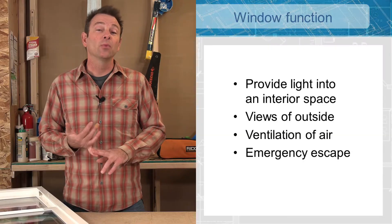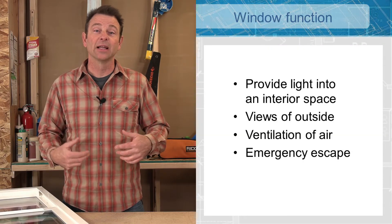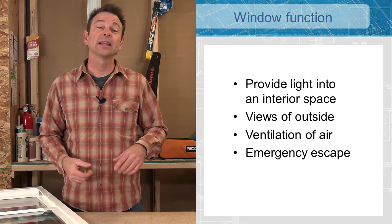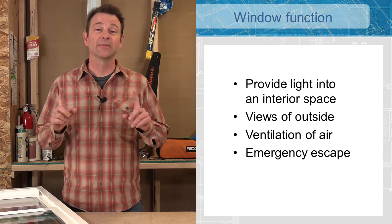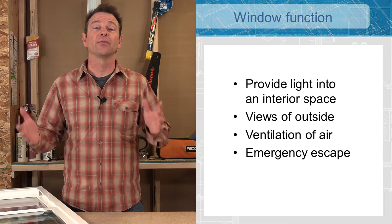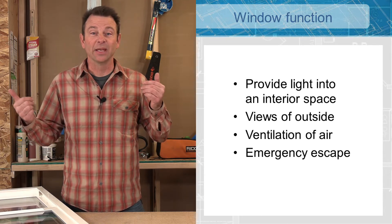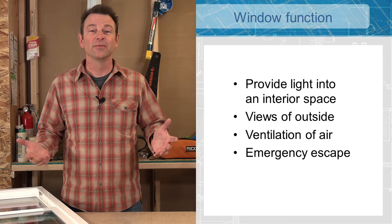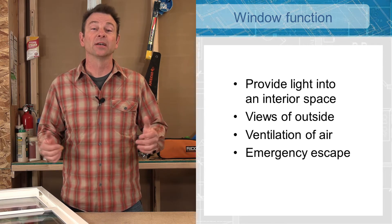Let me start our window conversation by saying that we ask a lot of our windows — we have high expectations for these building components. What do we want our windows to do? We want windows to bring in visible light. We're people; we don't live in caves anymore. We like sunlight. We also like views, so a window needs to offer a view — the office with a view, the home with a view.